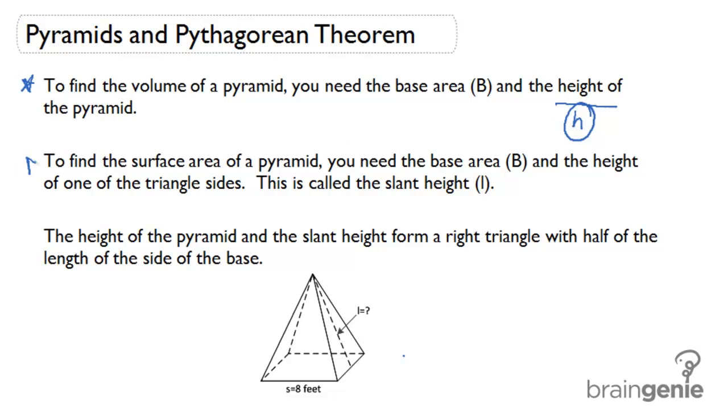To find the surface area of a pyramid, remember that we needed the height of one of the triangle sides, which we called the slant height or the L.